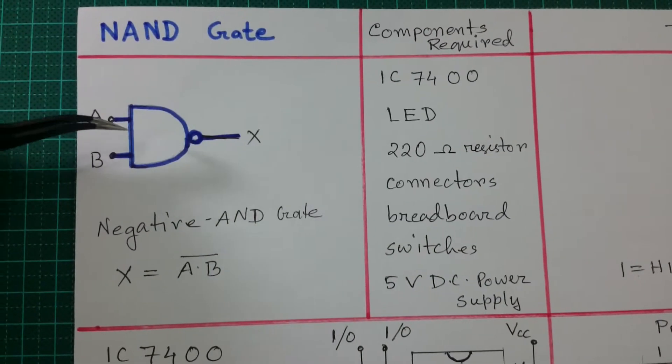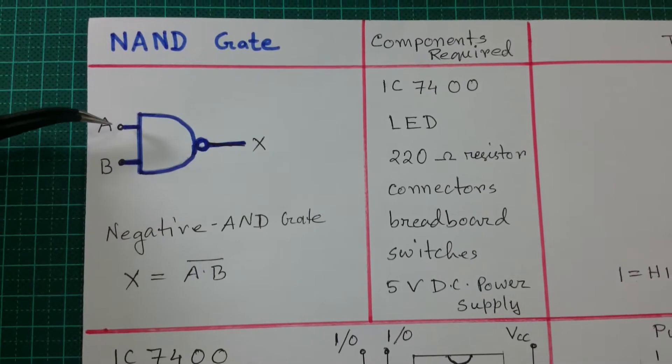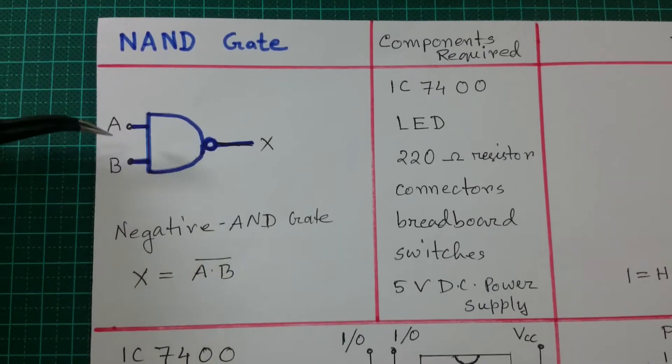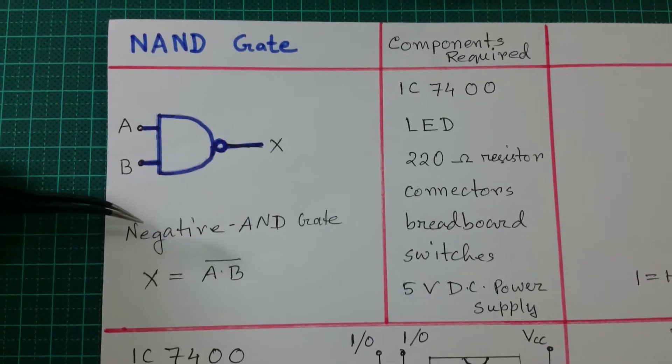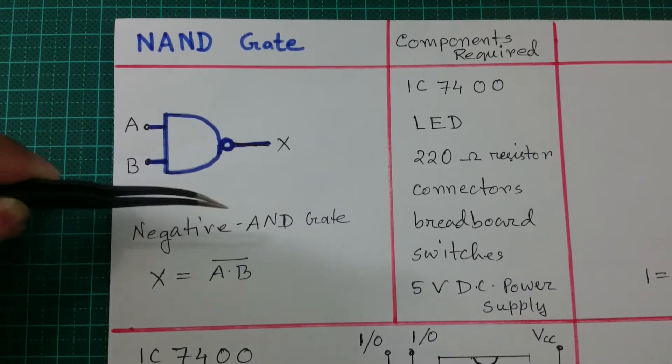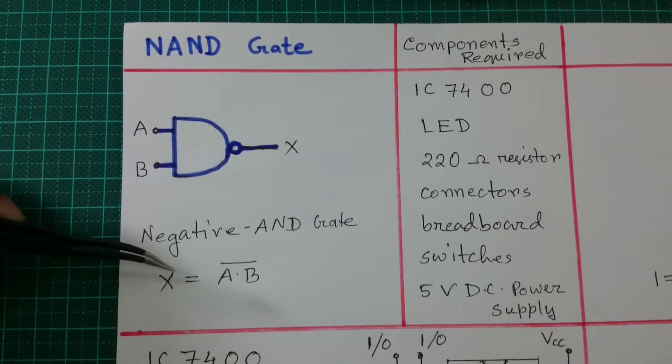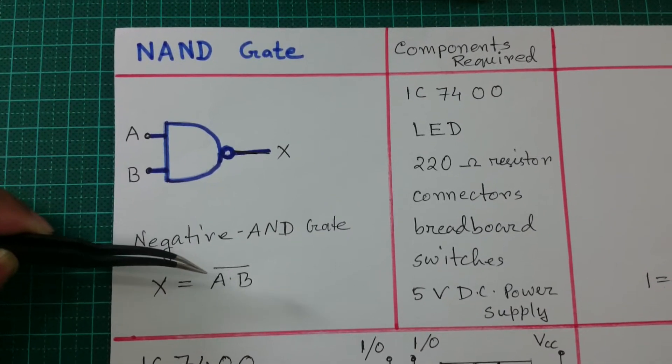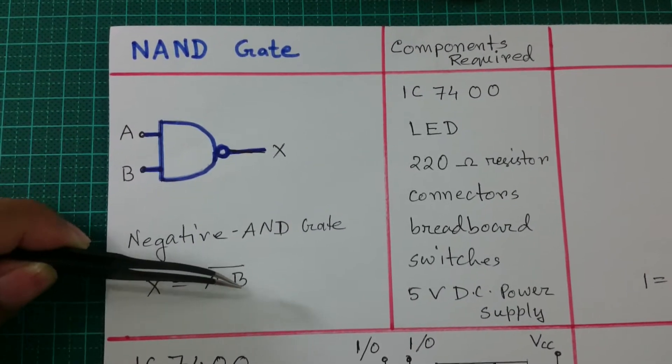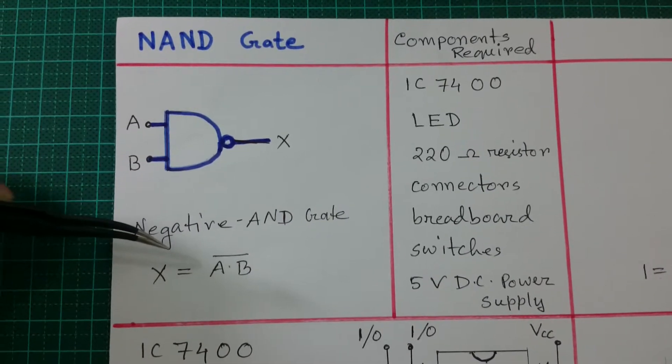This is the NAND gate symbol. Here we are using a two-input, one-output NAND gate. NAND gate is basically a negative AND gate. This is the Boolean expression. It inverts the normal output of the normal AND gate. That is why it is called the NAND gate.